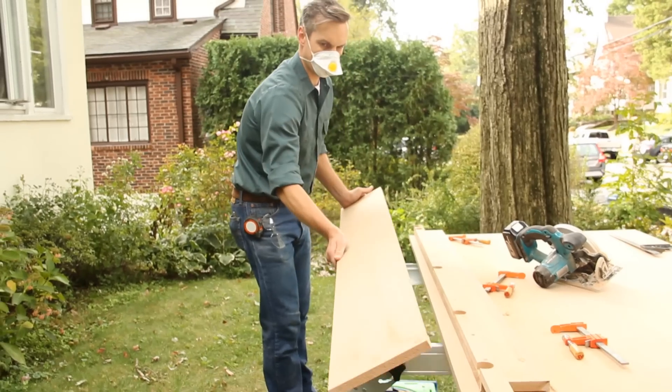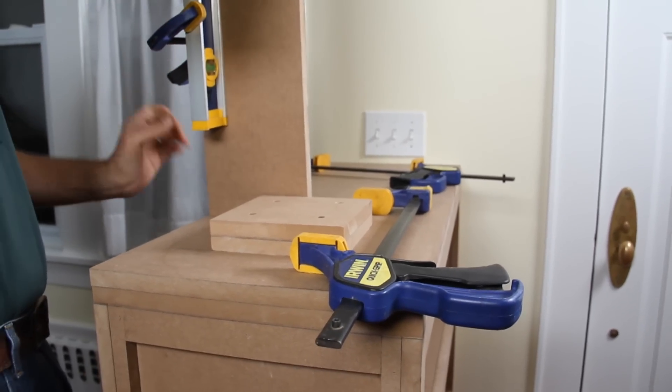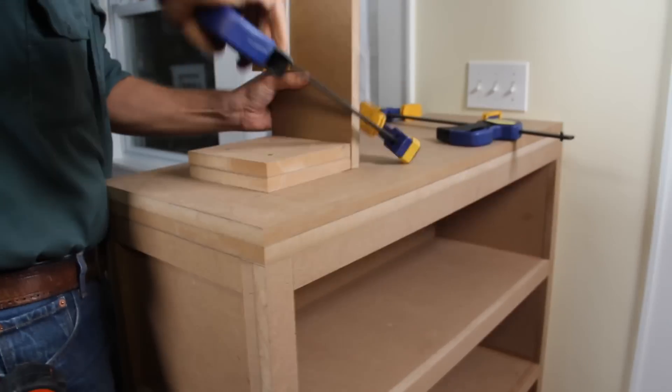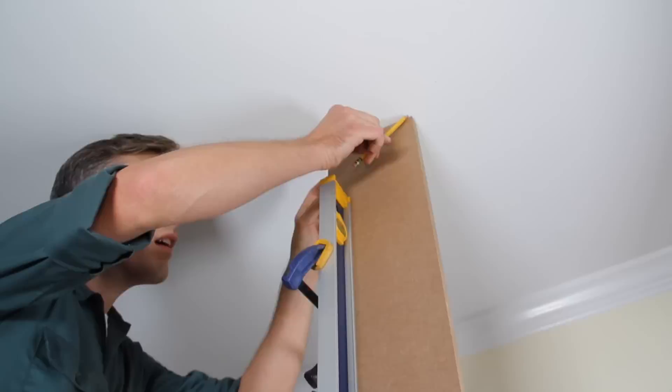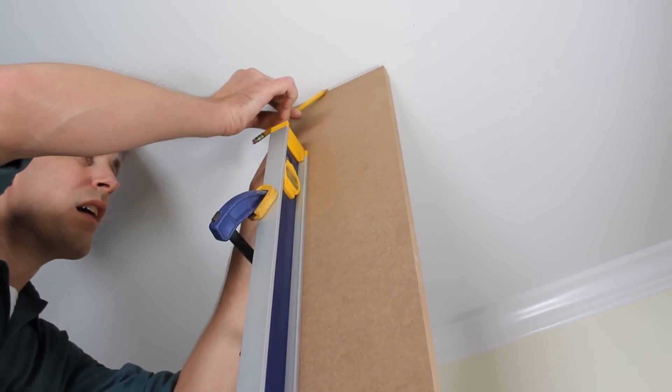Measure from the top of the cabinet to the ceiling and cut four column panels to fit. Slip one panel into position between the ceiling and the top of the cabinet and clamp it to the blocking. Use a long level to plumb the piece and then mark the ceiling.